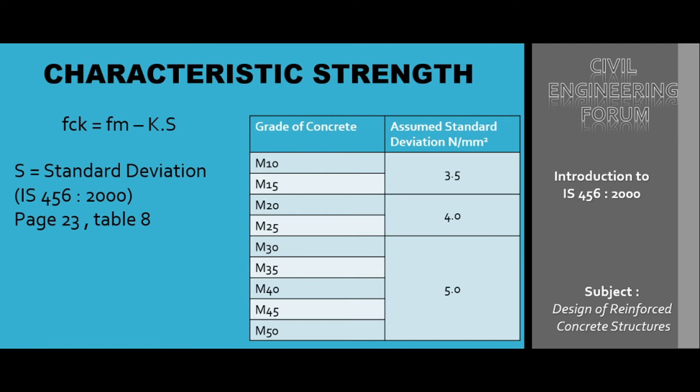We have the formula: fck = fm − k × s, where s is the standard deviation. The value of standard deviation is dependent on IS 456:2000, specifically the table given on page number 23, which is Table 8.